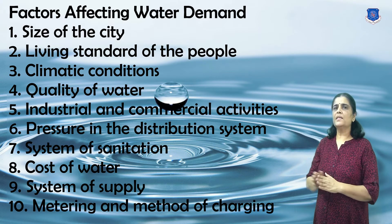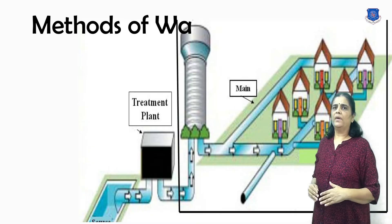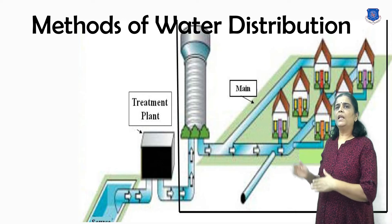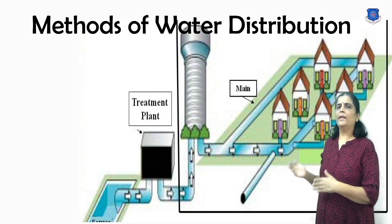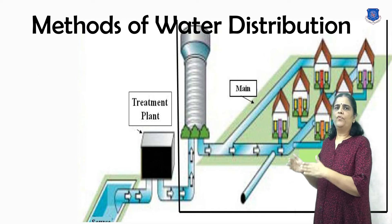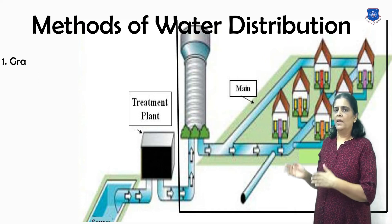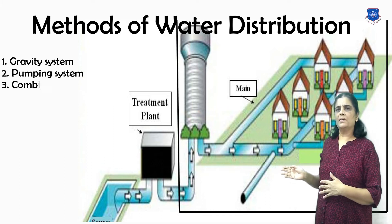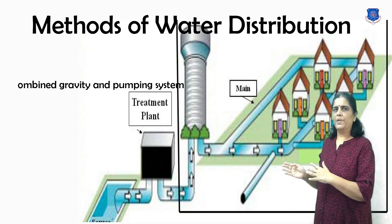For an efficient distribution system, adequate water pressure is required at various parts. Depending upon the level of the source, topography of the area, and other local conditions, the water may be forced into the distribution system by three ways: gravity system, pumping system, and combined gravity and pumping system.